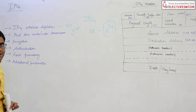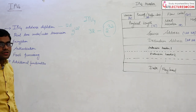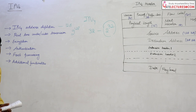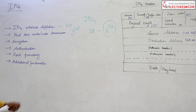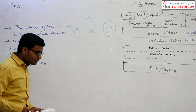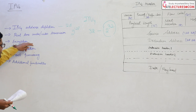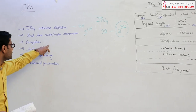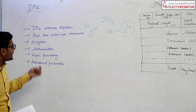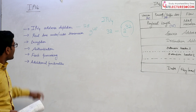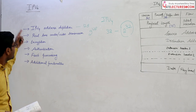The second important reason is that IPv4 doesn't support real-time audio and video transmission. IPv6 supports audio-video transmission. In IPv4, encryption is provided at the application layer, but in IPv6 we have provided this feature in the network layer as well. Similarly, authentication, which was provided via the application layer in IPv4, is now included in the network layer with IPv6.